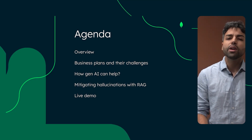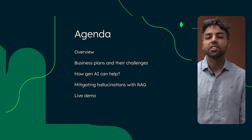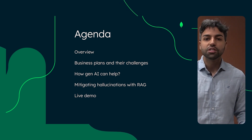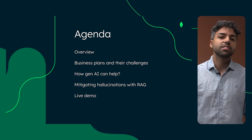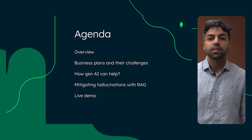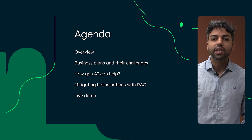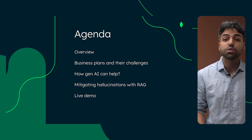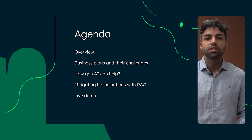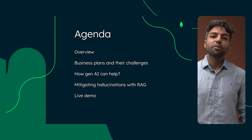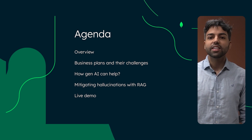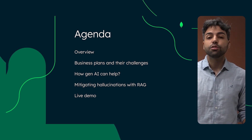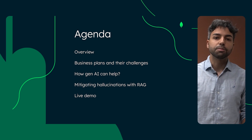Let's take a quick look at what's on our agenda for today. First, we'll dive into the importance of business loans and the key challenges around business plans. Then, we'll explore how Generative AI can help tackle these challenges and how we can reduce errors that hallucinations can cause — as you may already know, ChatGPT can make mistakes. And finally, we'll wrap up with a live demo to see everything in action.